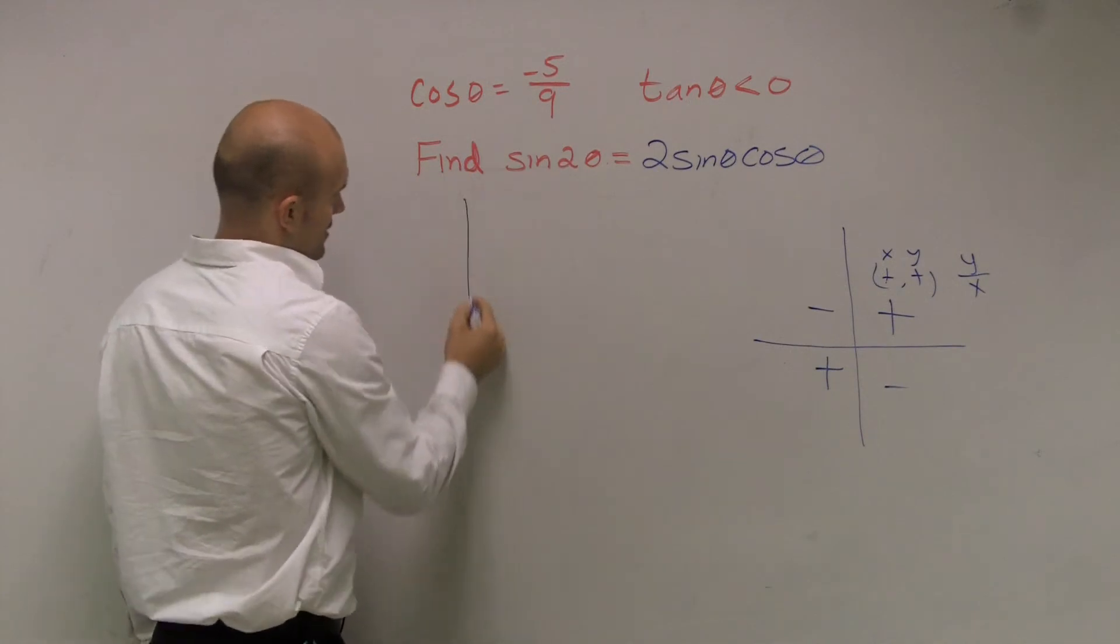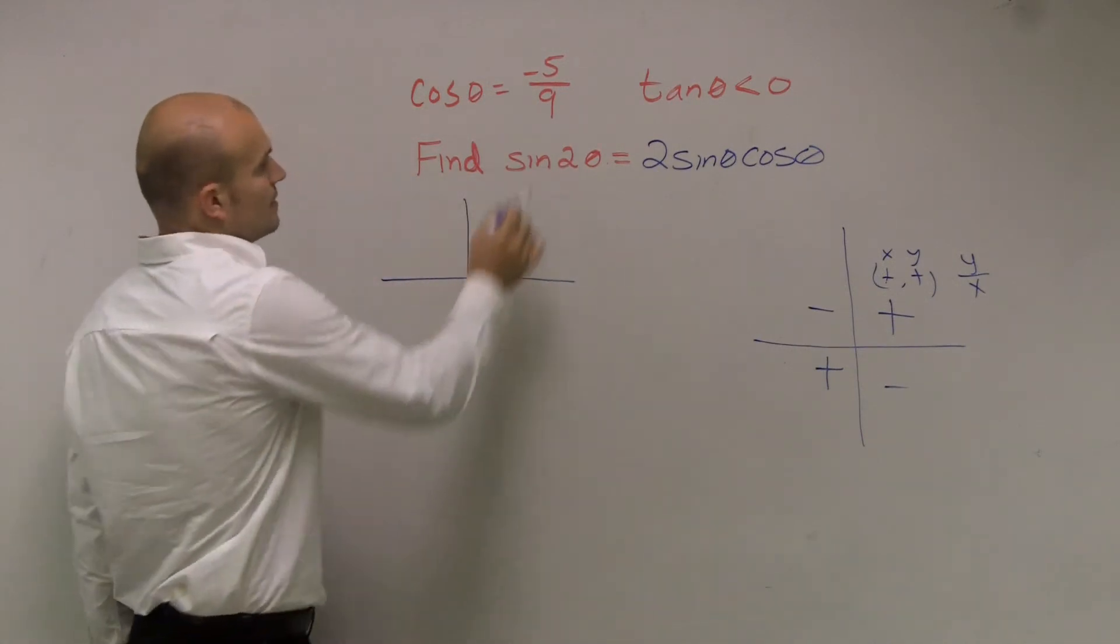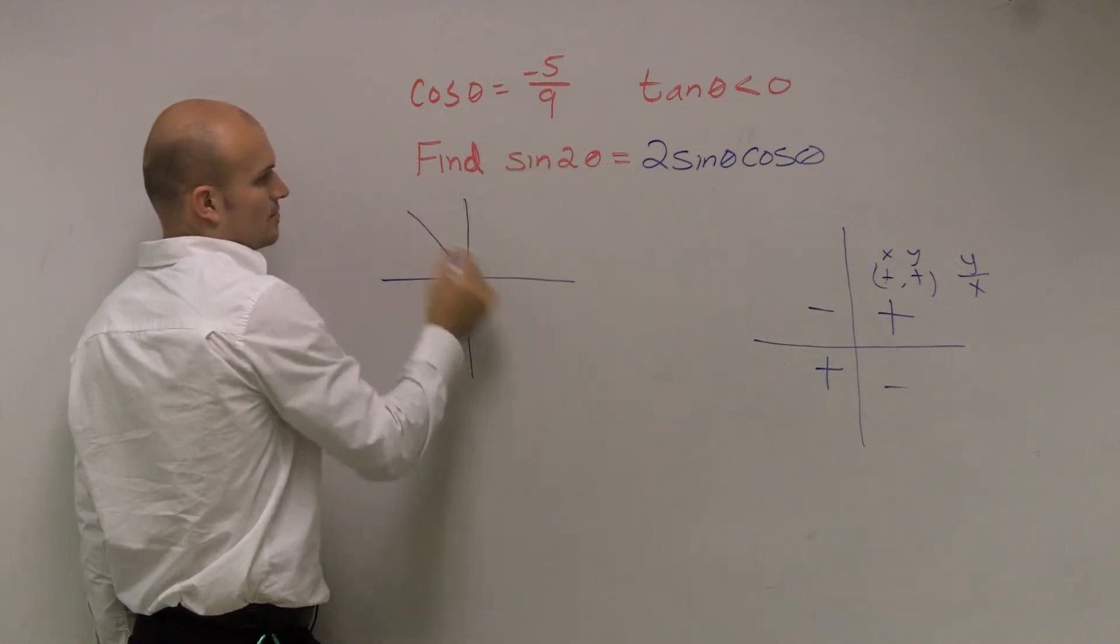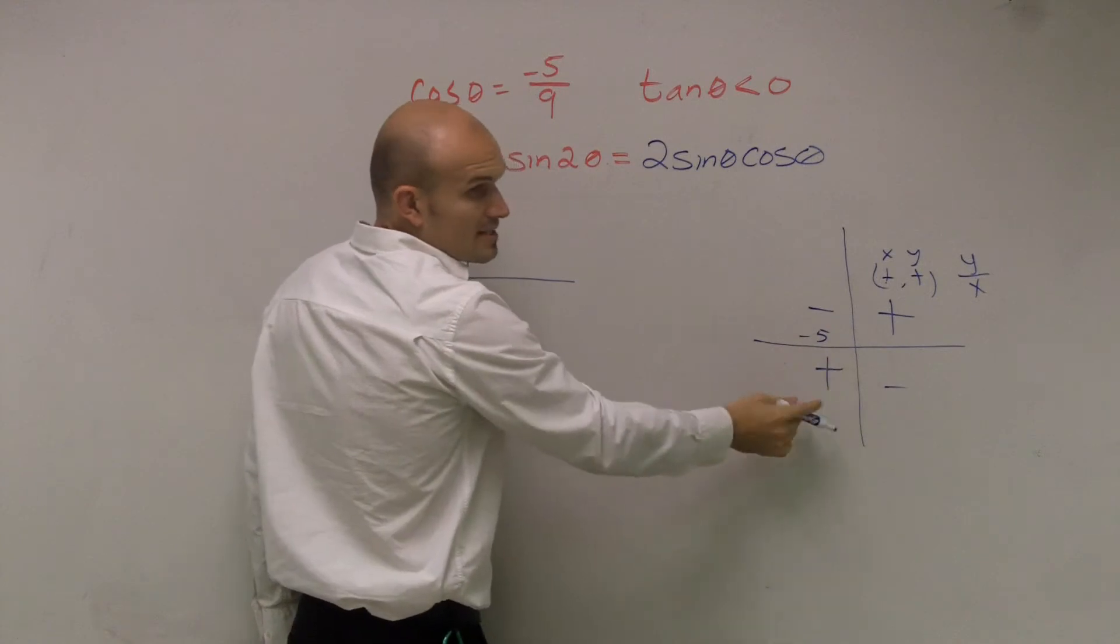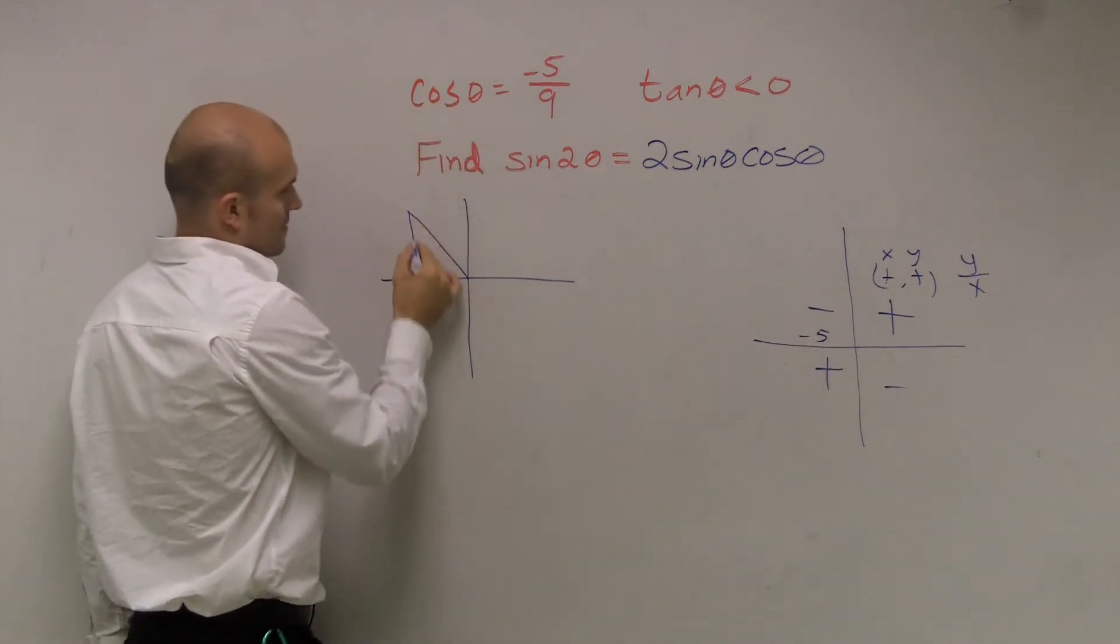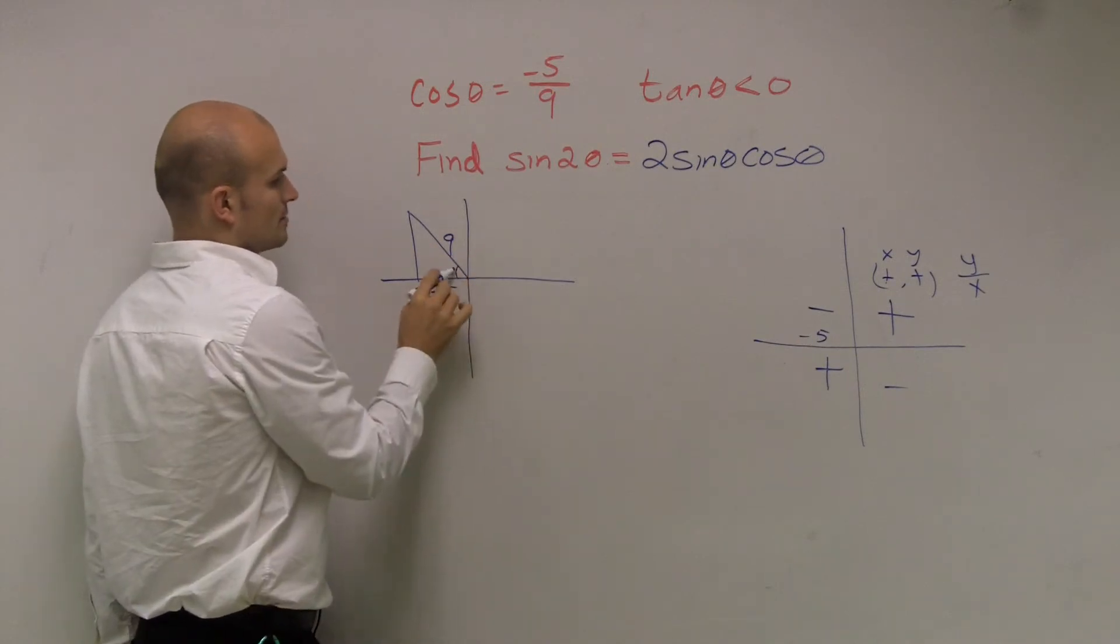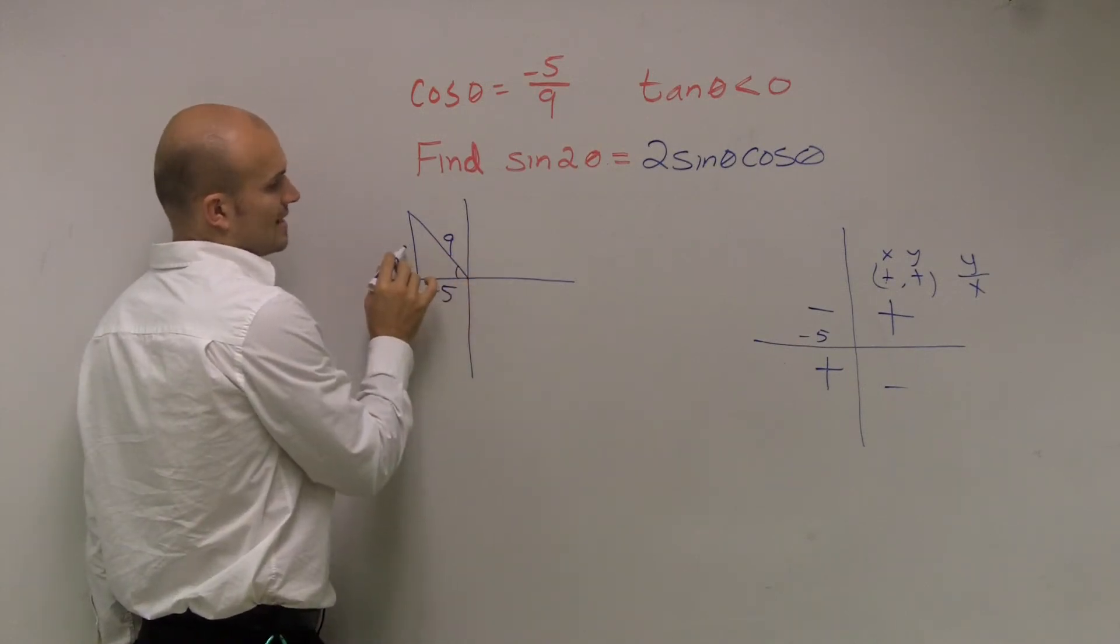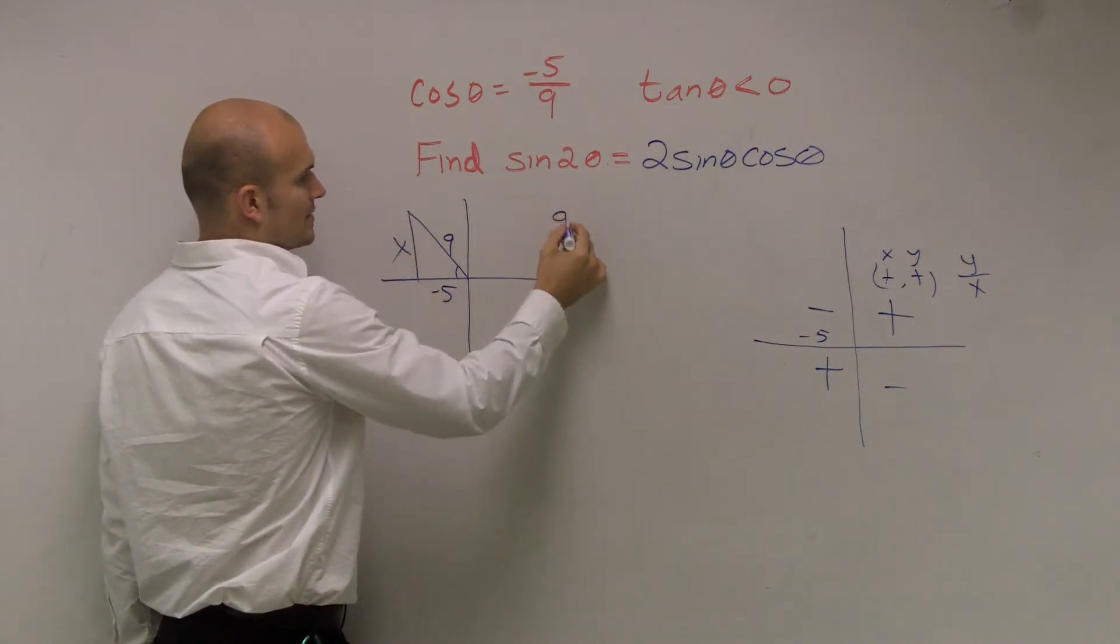So if I'm going to write the triangle for a negative 5 over 9, 9 is always going to be your hypotenuse. It has to be a negative 5. It can't be down here because that would be a tangentially positive. So therefore, I have negative 5 and 9. Well, to find the sine, I need to figure out what my opposite sign is. So I do the Pythagorean Theorem.